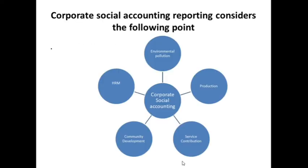Corporate social accounting reporting considers the following points. Companies are contributing towards the environment — they take and use resources, but at the same time they are polluting the air and water. There is a need to control such pollution, and companies contribute towards environmental safety — this is environmental protection. When doing production, resources should be used in an optimal way and natural resources taken from society should not be wasted.